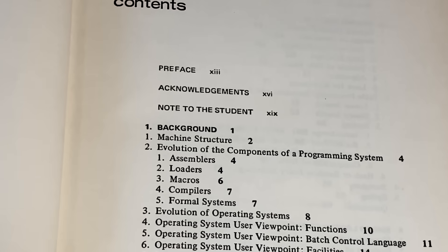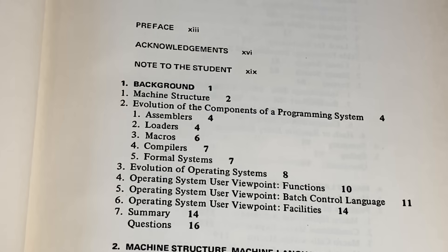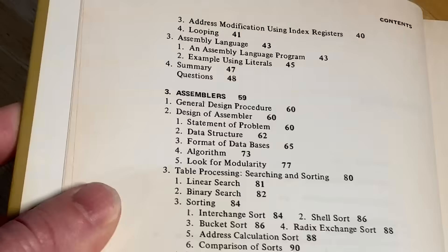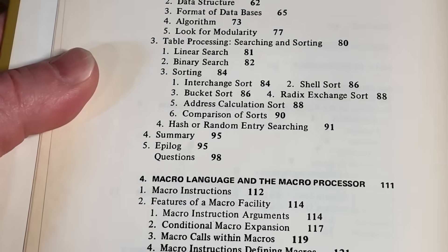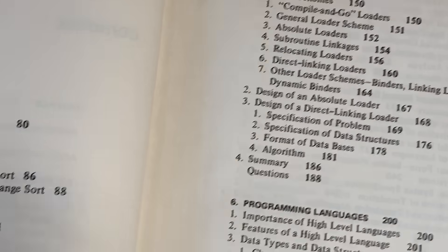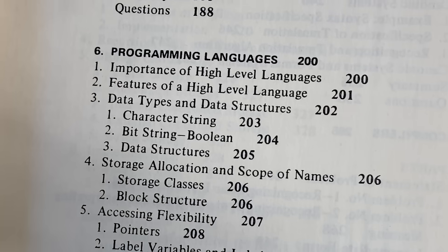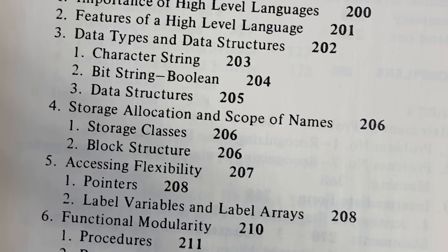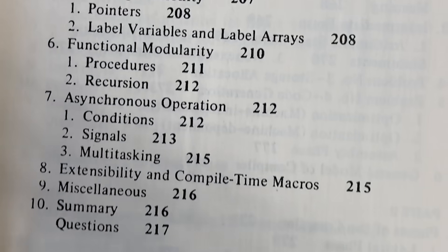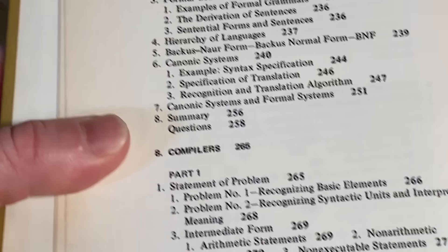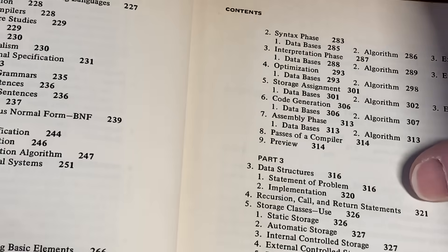Let's take a look at the contents. So it starts with background, then machine structure, machine language, and assembly language — things that you might learn if you got a degree in computer science. Assemblers, macro language, and the macro processor. Loaders, programming languages — the importance of high-level languages, features of a high-level language, data types and data structures, storage allocation, and scope of names. Formal systems and programming languages — an introduction. Compilers. And then there's a lot more on operating systems. This contains a wealth of information.